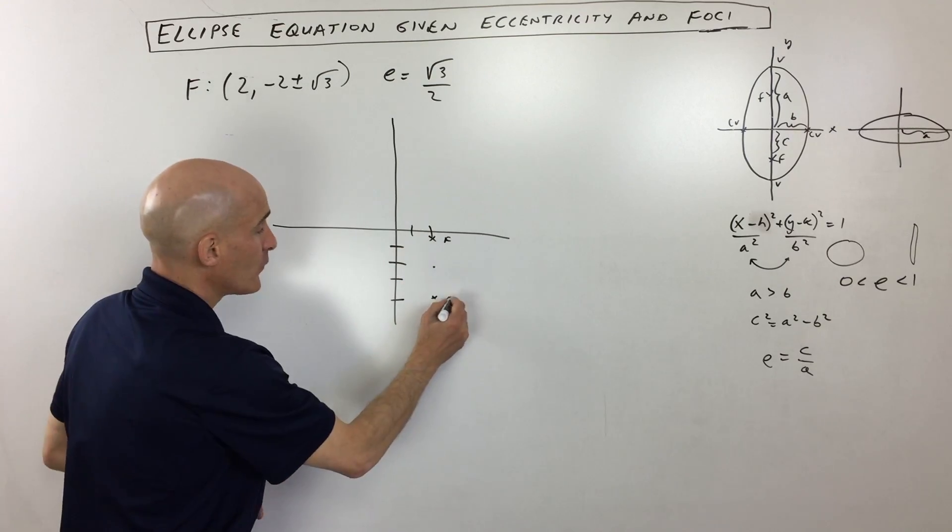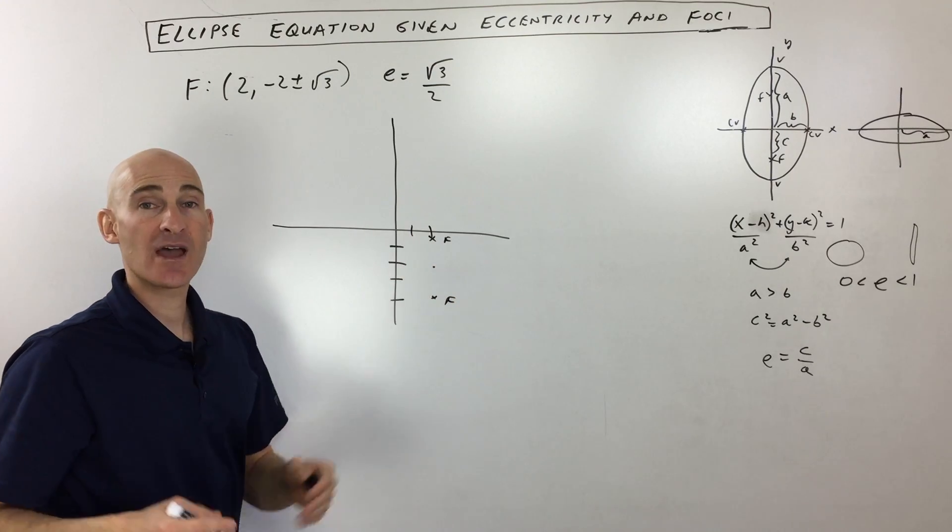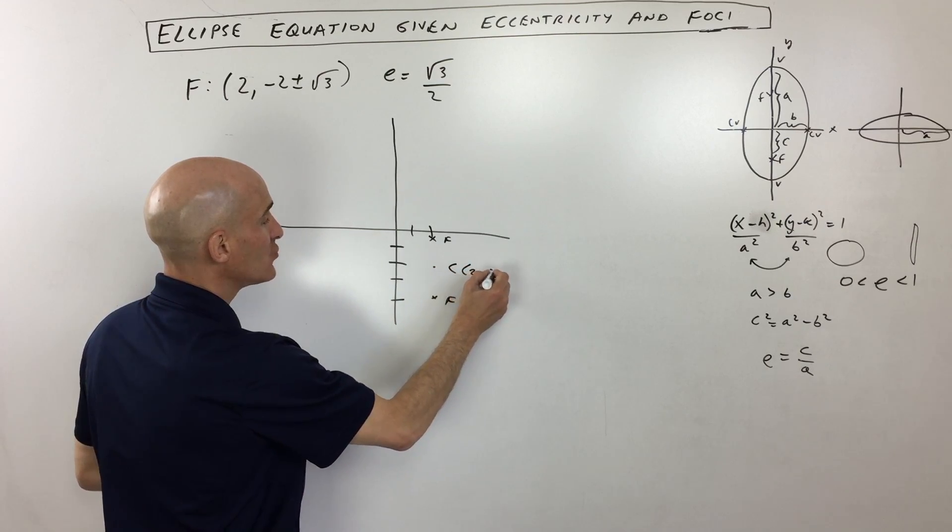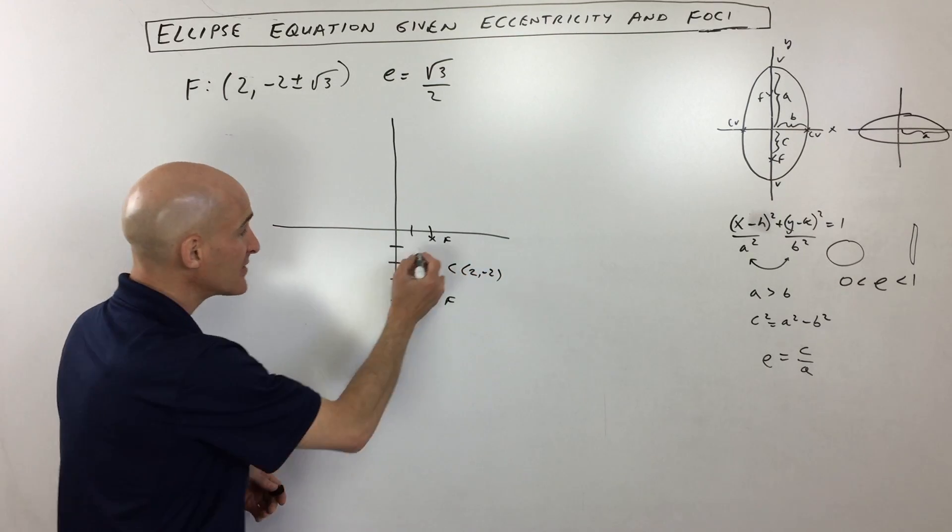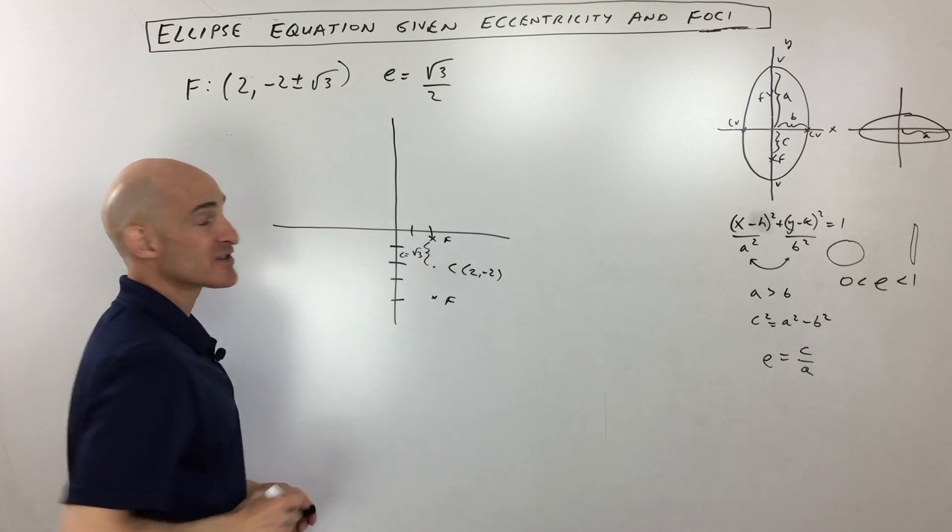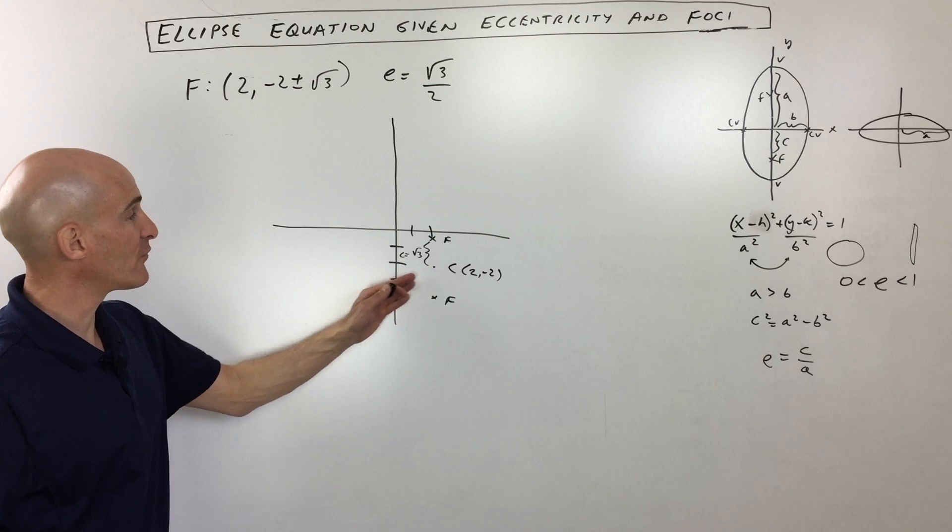So these are your foci. Halfway between your foci, that's the center point. So you can see in this problem, the center is at 2 comma negative 2. And this distance from the center to the focus is square root of 3. That's our C value.